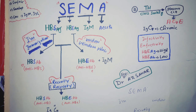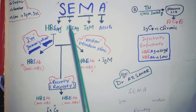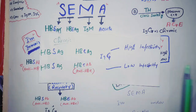If we produce antibodies against both S and E antigens, that means this is the recovery phase — recently recovered. So the markers are anti-HBS and anti-HBe. Recovery is late, so the antibodies against the core will be IgG.